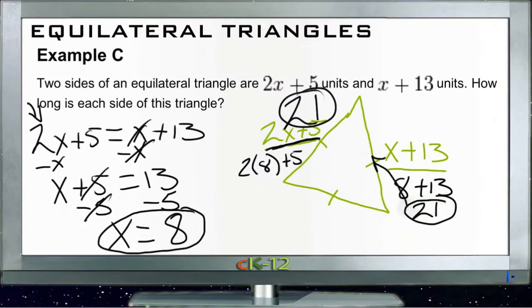And this side over here is 21 units which we hope is the case since this is an equilateral triangle. And it also tells us that this side down here which we didn't know anything about before must also be 21 units because all three sides have to be the same.